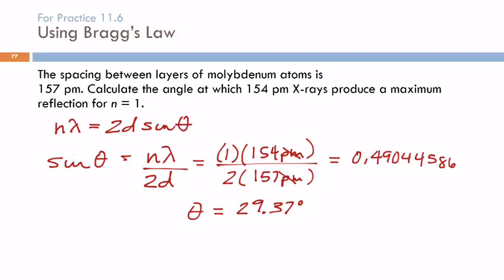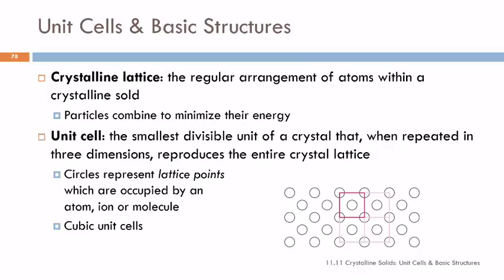So that tells us that if we put the x-ray beam in at an angle of 29.37 degrees above the surface, that we're going to get a maximum reflection. Significant figures kind of go out the window, at least for Chem 1a when we talk about sine and inverse sine. We're not going to worry about it.